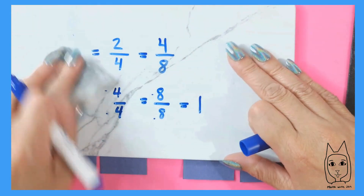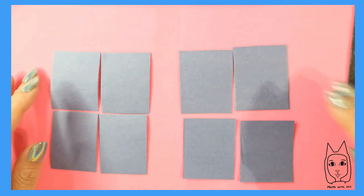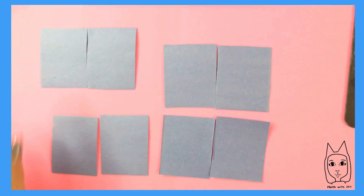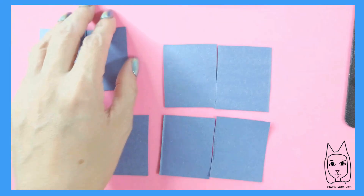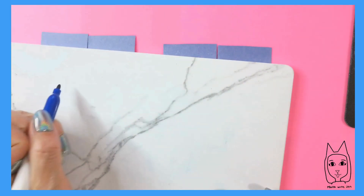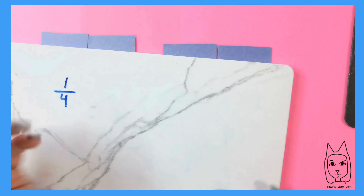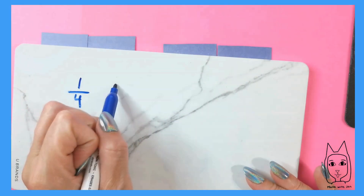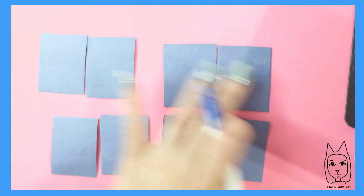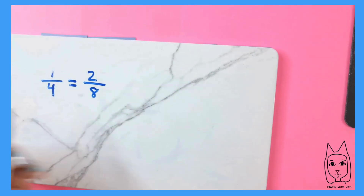Let's keep looking at fourths and eighths. Say that these are my fourths — pretend they were all together and this was my whole. So that one-fourth of the whole that we had before, how many parts is it now of the whole? We had one-fourth and then each of those parts are being divided up into two. So now this one-fourth is being represented by two parts, but it's not over four parts anymore — it's out of eight parts. So we now have two-eighths. One-fourth is equivalent to two-eighths.